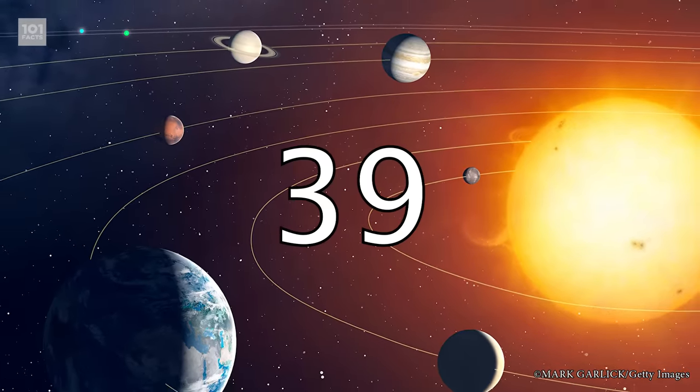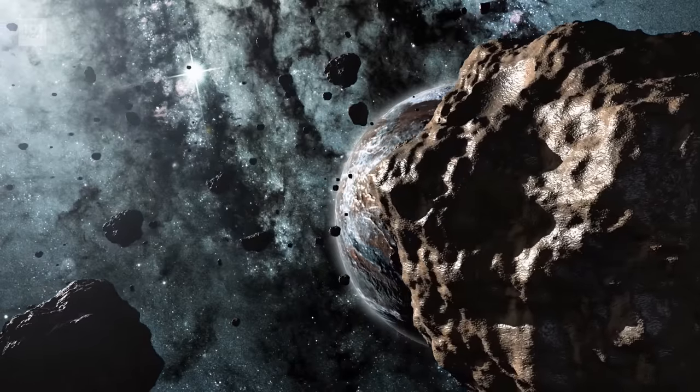Between Mars and our next planet, there's a big old asteroid belt. No points for guessing that's a belt made of asteroids. But what you might not know is that the mass of the belt is made up of four objects, not hundreds of thousands of asteroids.